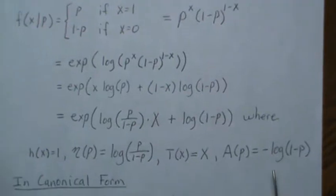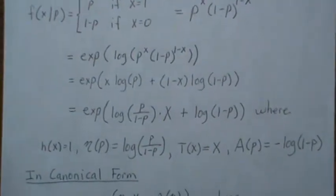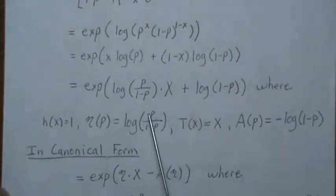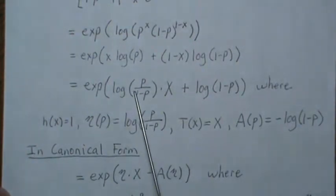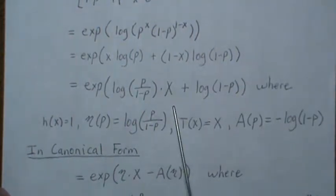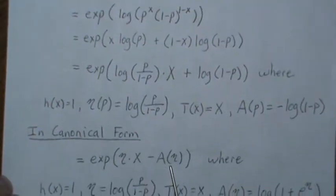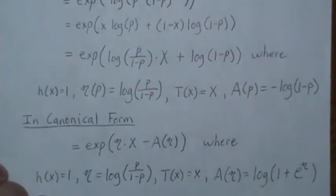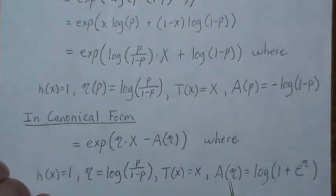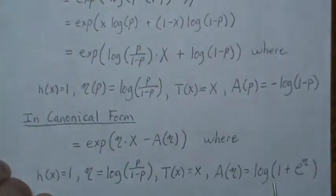Now to write it in canonical form, instead of calling this log of p over 1 minus p, we just call it eta. Okay, so it's eta times x, and then this log partition is determined so the whole thing integrates to 1. And it turns out that the log partition is log of 1 plus e to the eta. And then when you plug in this piece here, we get back this. But once we have it in this form, now we're going to take derivatives or partial derivatives of this log partition to come up with the mean.